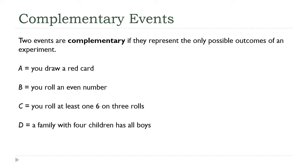Two events are complementary if they represent together the only two possible outcomes of an experiment. I've got some examples of events here, A, B, C, and D, and what I want to do is think about what the complement of each one is.